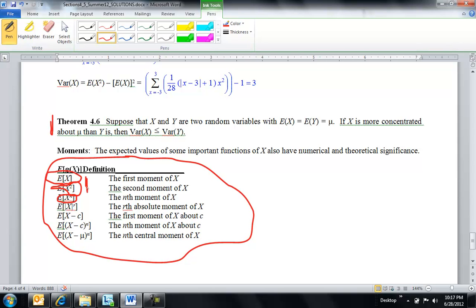So moments are useful for finding different aspects of a random variable, spread. Well, we already know spread, but peakedness, tails, long tails, et cetera. So, okay, that's it for Chapter 4.